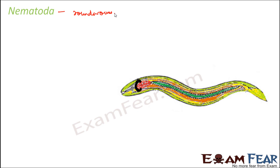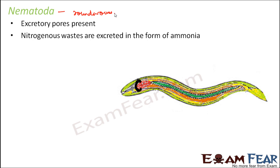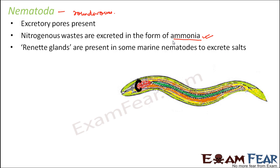Next are the nematodes — the roundworms. Examples of nematodes include Rhabditia. These nematodes have specialized excretory pores: small or minute openings called pores only for the purpose of excretion. Nitrogenous wastes are excreted in the form of ammonia. Since ammonia is highly soluble in water, it is excreted dissolved in water through these pores. However, some nematodes also have specialized glands called rennet glands which are used to excrete salts.